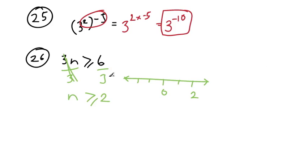But now we have to graph n is greater than or equal to 2. So because it could be or equal to 2, we've got to do a shaded in circle because it could be equal to, and n is also greater than.